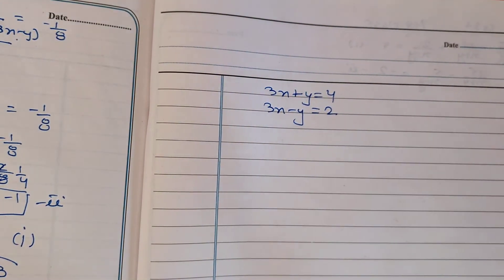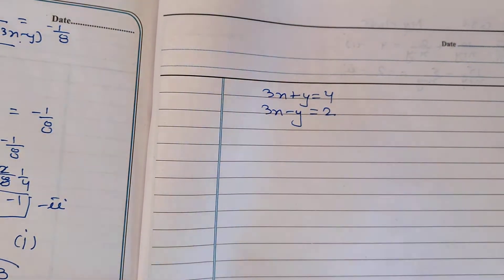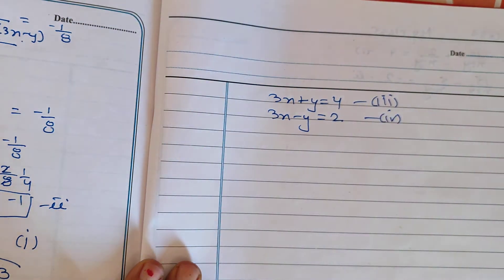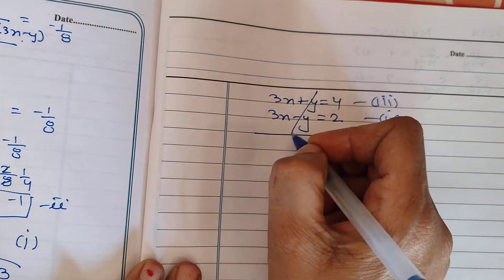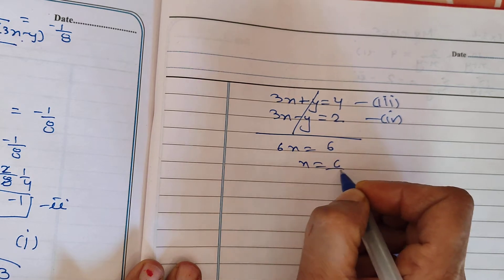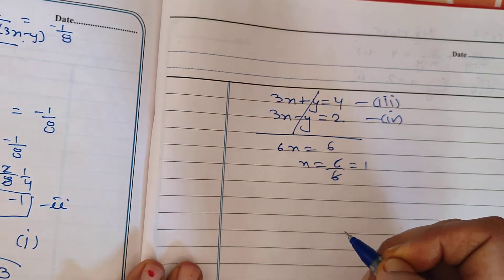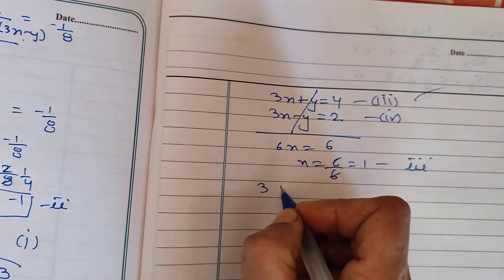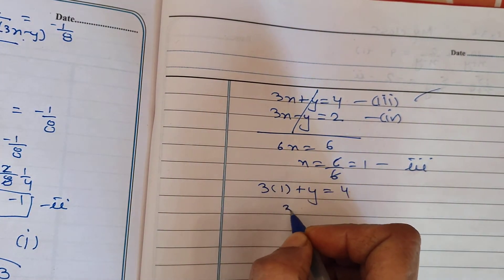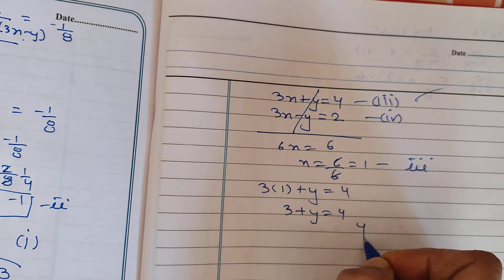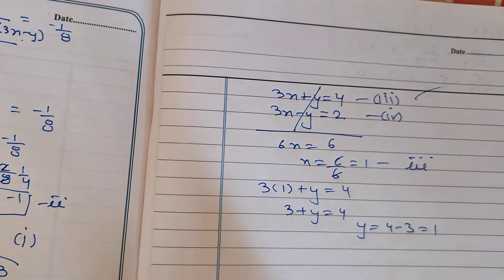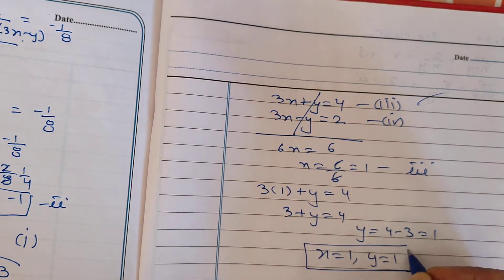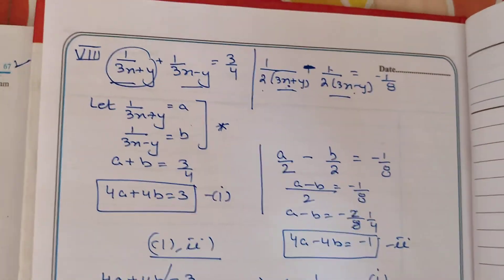Cross-multiplying, we form equation number 3: 3x plus y equals 4, and equation number 4: 3x minus y equals 2. Applying elimination method to equations 3 and 4, they cancel directly to give 6x equals 6, so x equals 1. Putting x equals 1 into equation 3: 3 times 1 plus y equals 4, so y equals 4 minus 3, which gives y equals 1. So my required answer is x equals 1 and y equals 1.